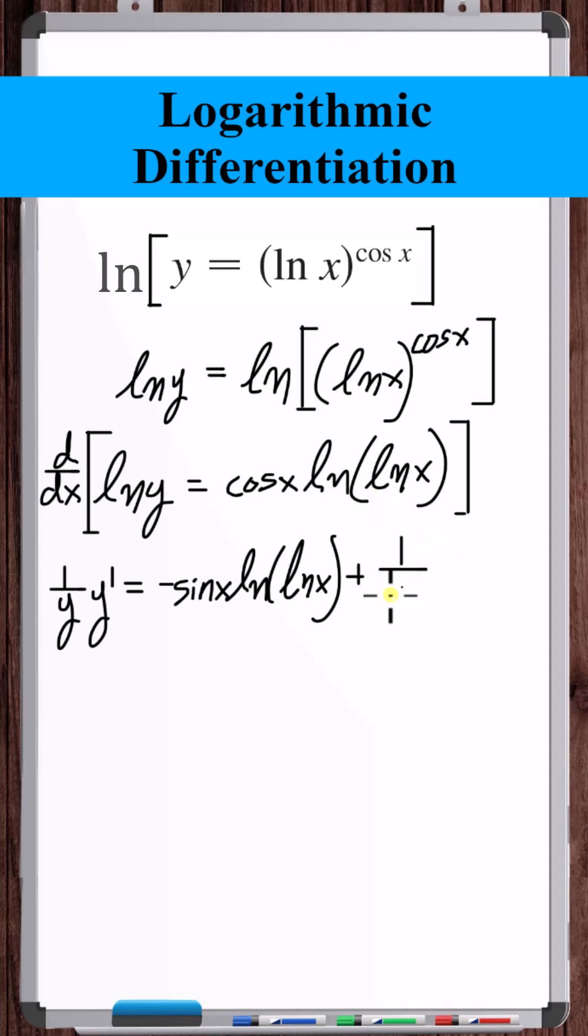The derivative of natural log of something is 1 over that something times the derivative of that something. So the derivative of the first times the second plus the derivative of the second times the first.